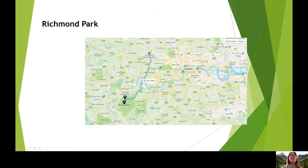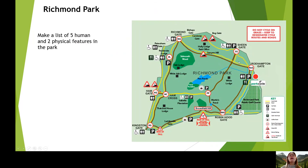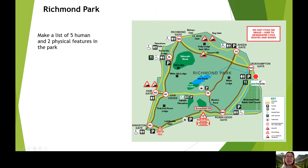Now let's have a closer look at a map of Richmond Park and all the amazing things that are here. Could you make a list of five human features — man-made features — and two physical features in the park? We can see plenty of human man-made features: lots of gates, which are entrance areas — Bishop's Gate, Bog Gate, Sheen Gate, Roehampton Gate, Robin Hood Gate, Kingston Gate, Ham Gate and Petersham Gate.